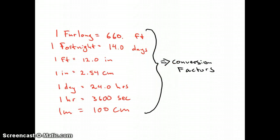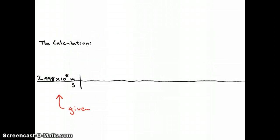By expressing these equivalent statements as quotients, we will get the conversion factors we need to solve the problem. We begin the calculation by drawing a flat line. Everything on top of the line is in the numerator, everything below the line is in the denominator. Then the first number we record is our given, 2.998 times 10 to the 8th meters per second.